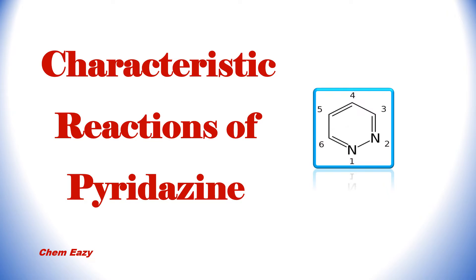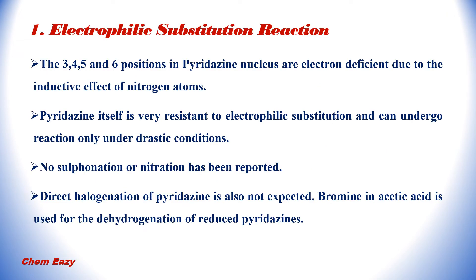Now let us go to the characteristic reactions of pyridazine. Note on the numbering: the first and second positions have heteroatoms, and the third, fourth, fifth, and sixth positions are carbon atoms. The first reaction is electrophilic substitution. The third, fourth, fifth, and sixth positions of the pyridazine nucleus are electron deficient due to the inductive effect of the nitrogen atoms. Pyridazine is very resistant to electrophilic substitution and can undergo reaction only under drastic conditions. No sulfonation or nitration has been reported for this heterocyclic compound. Direct halogenation of pyridazine is also not expected.